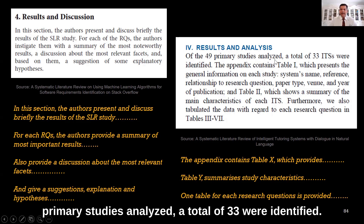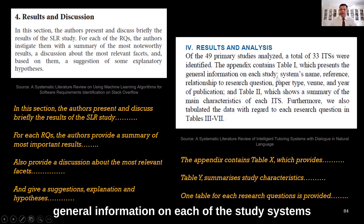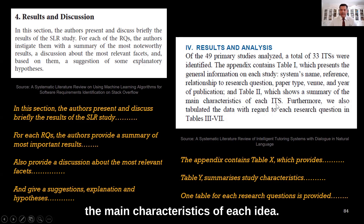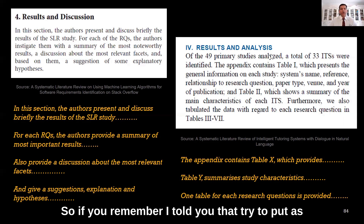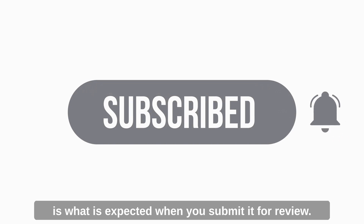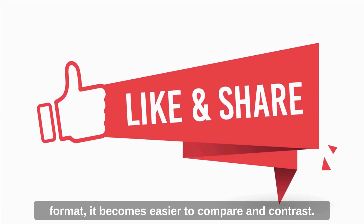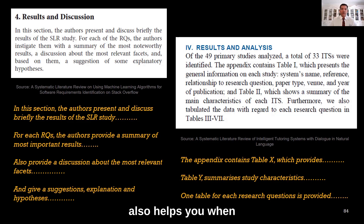This paper begins by stating that of the 49 primary studies analyzed, a total of 33 were identified. The appendix contains Table 1, which presents general information on each study system, and Table 2, which shows a summary of the main characteristics of each IDS. Data was also tabulated with regard to each research question in Tables 3 to 7. Using tables and figures is important because it is expected when you submit for review and it is a good way to showcase findings — a tabulated format makes it easier to compare and contrast.